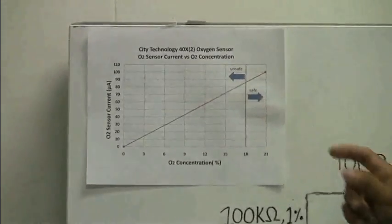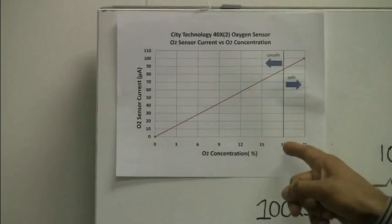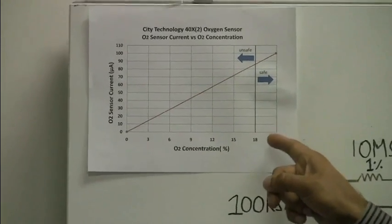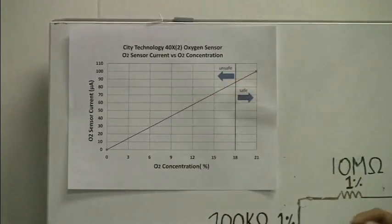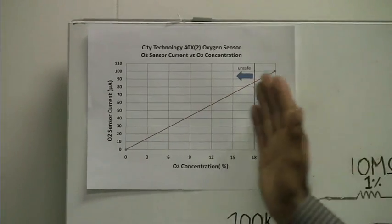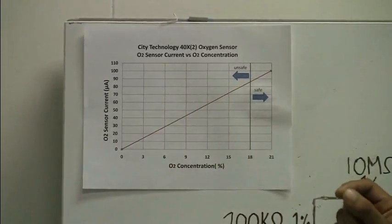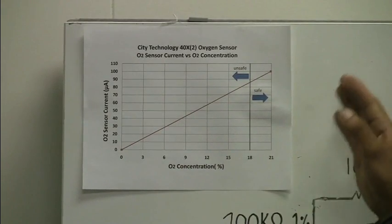At a 21% oxygen level, the output current is at approximately 100 microamps. At a dangerous oxygen level of 18%, it is at approximately 85 microamps. Oxygen levels below 18% are considered unsafe, and those above 18% are considered to be safe.